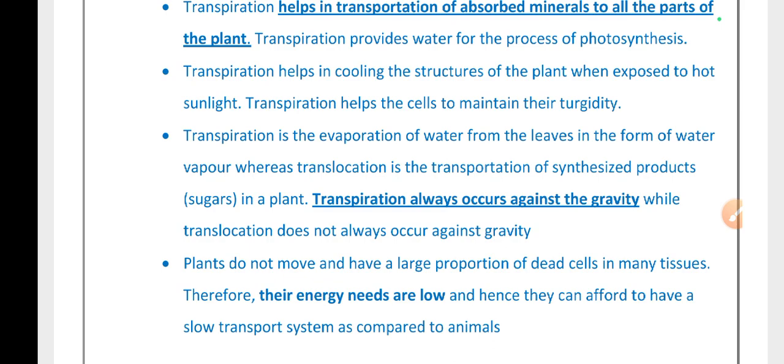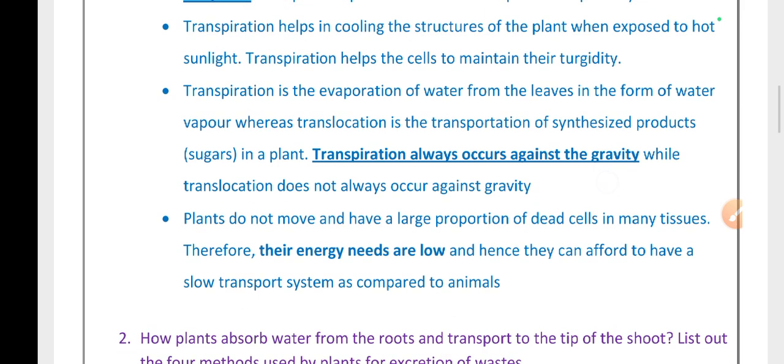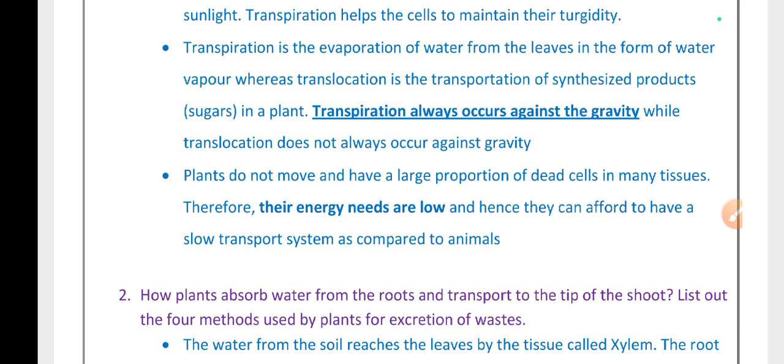Transpiration always occurs against gravity, while translocation does not always occur against gravity - both upward and downward flow of food occurs. Plants do not move and have a large proportion of dead cells in many tissues, therefore their energy needs are low.